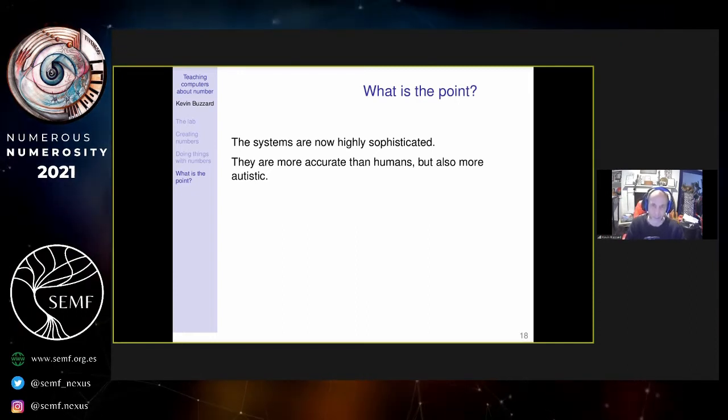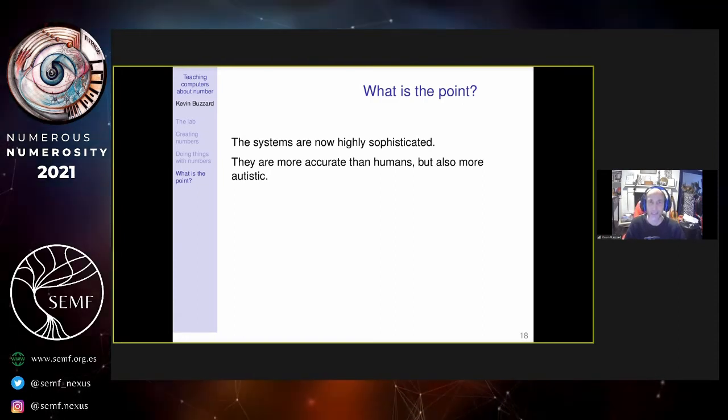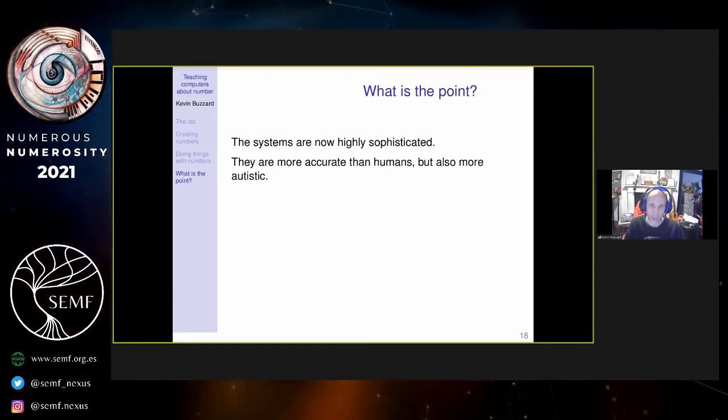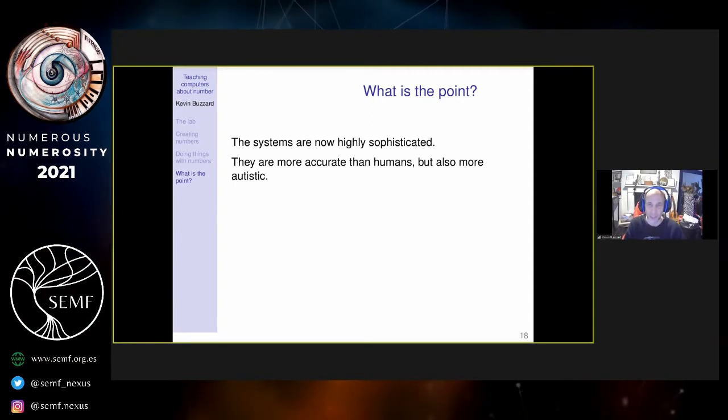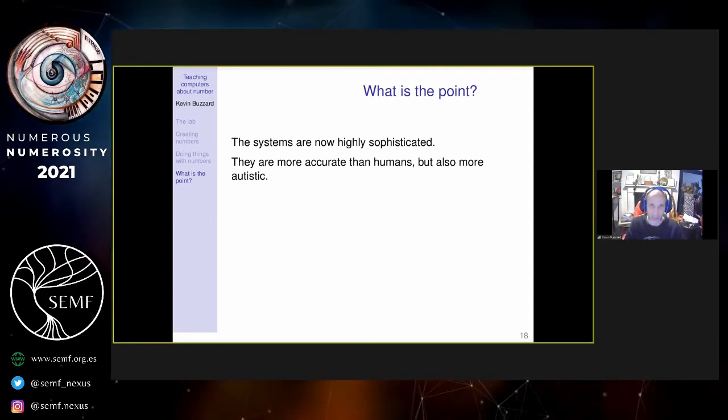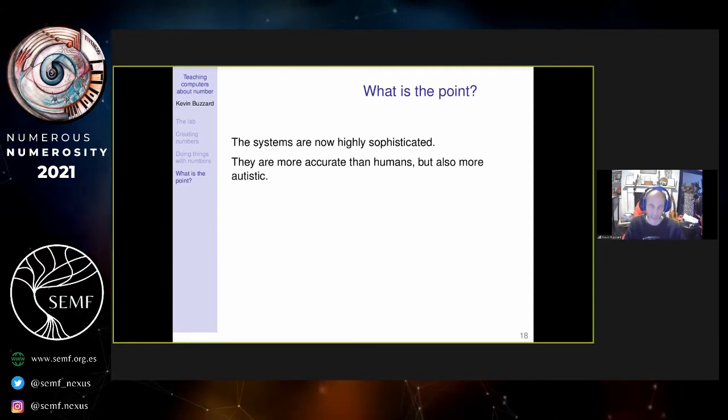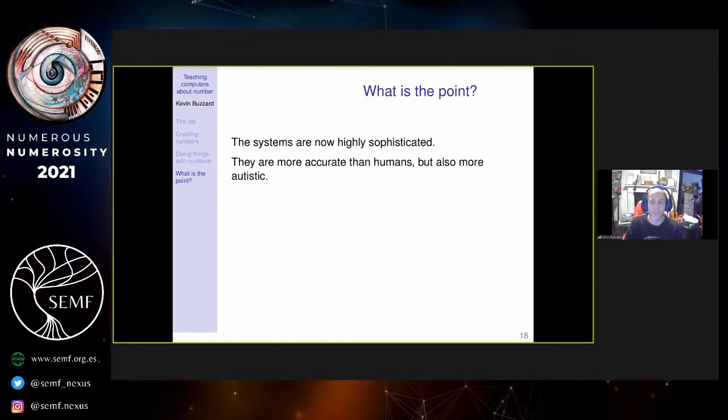These things are much more accurate than humans because we don't see them as making mistakes, whereas humans make mistakes everywhere. But they're also more autistic—they're less capable of thinking for themselves. They have some primitive AIs, but they're not quite there yet doing their own research.